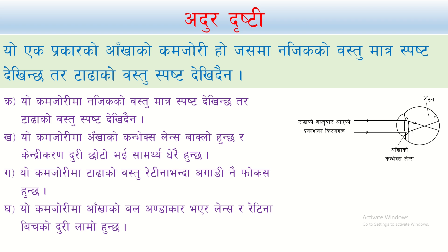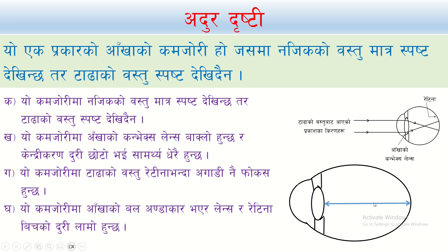The eyeball is elongated. In this case, the eyeball is red. This is a problem with this. If you look at the lens, the lens is the same. If you look at the lens, you will have to see the lens. This is a special view of the whole view.